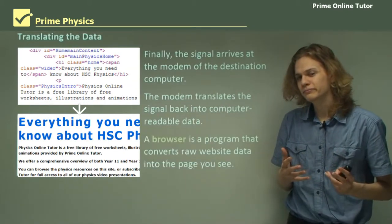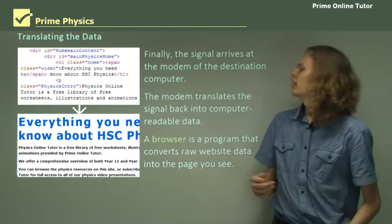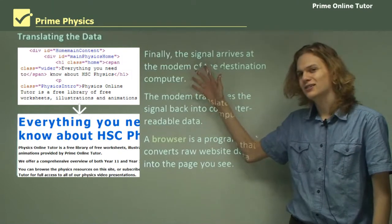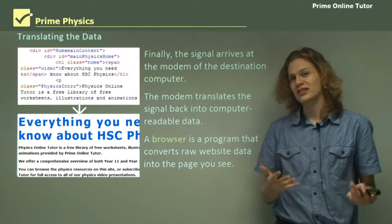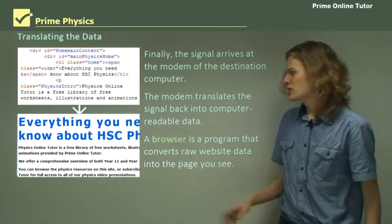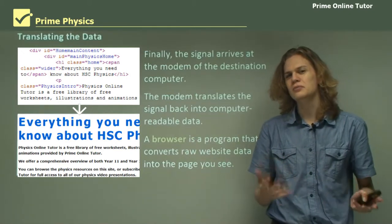And a browser, something like Mozilla Firefox or Google Chrome, is a program on your computer, which can turn this raw text and ones and zeros data into formatted data. That is, data that looks nice and pretty, something like this picture on the bottom, with the proper font and color and backgrounds and images and things like that.